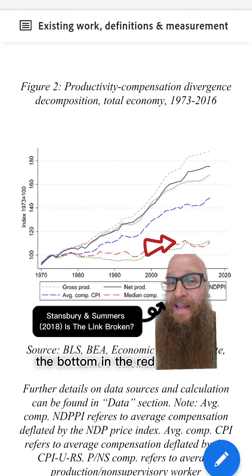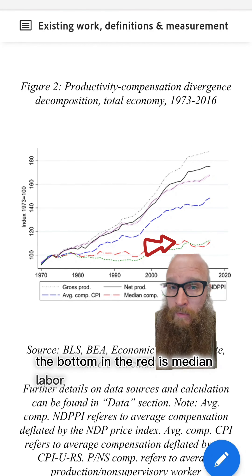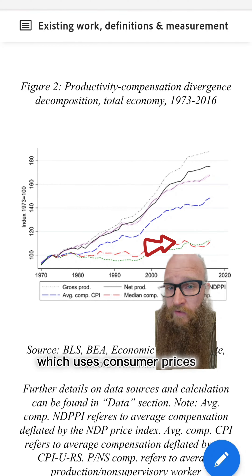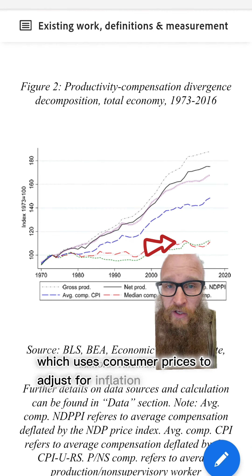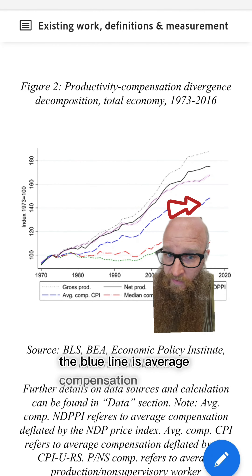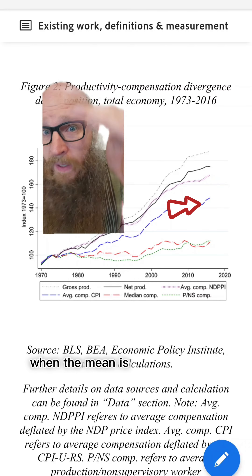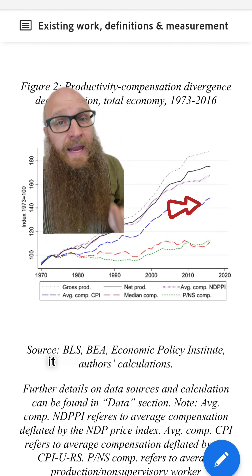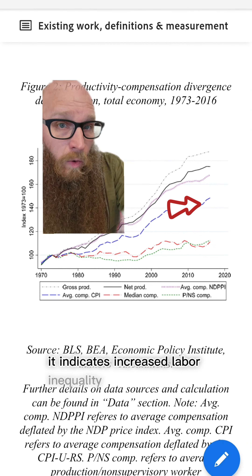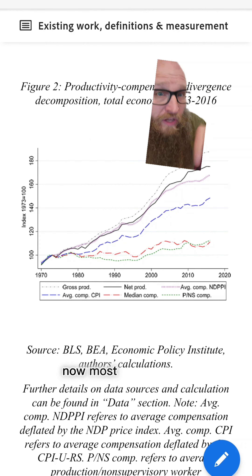Let's walk through this graph. The solid black line is productivity per hour, which uses producer prices to control for inflation. At the bottom in red is median labor compensation, which uses consumer prices to adjust for inflation.